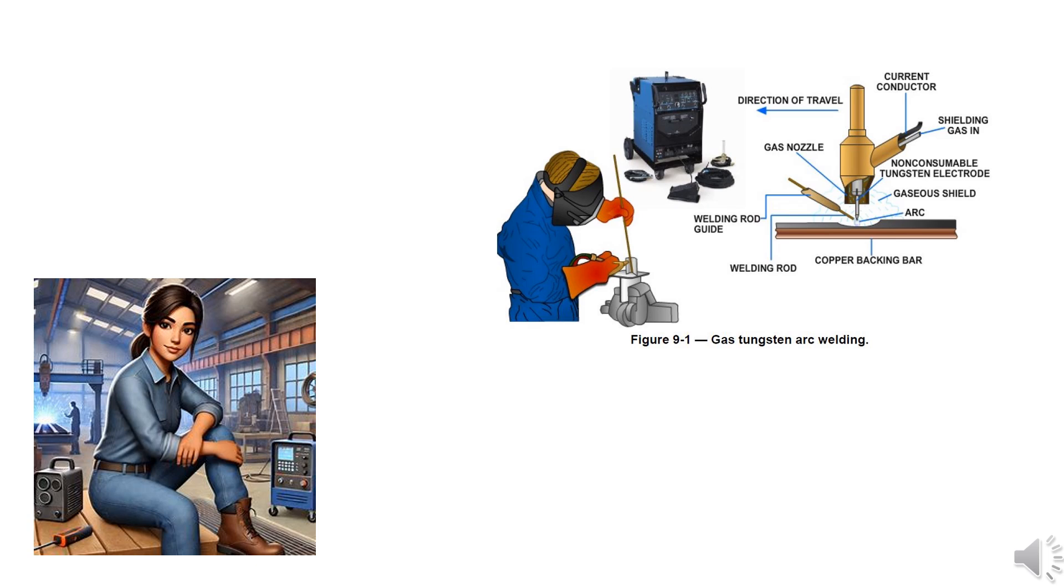Welders commonly utilize GTAW to join thin sections of stainless steel and non-ferrous metals, such as aluminum, magnesium, and copper alloys. GTAW offers the welder greater control over the weld compared to other methods like shielded metal arc welding, SMAW, or gas metal arc welding, GMAW.